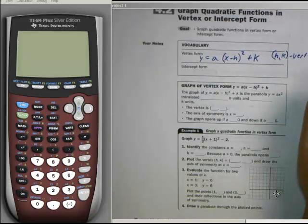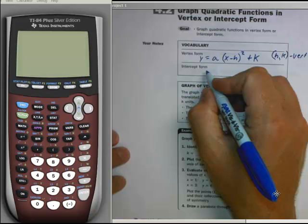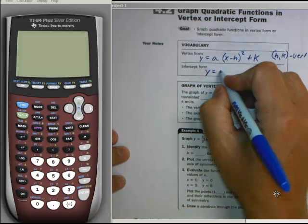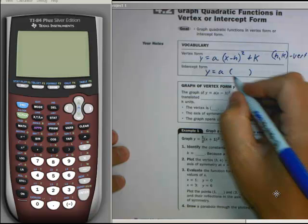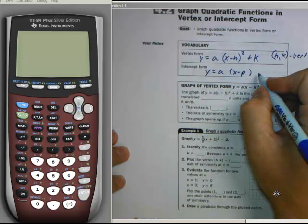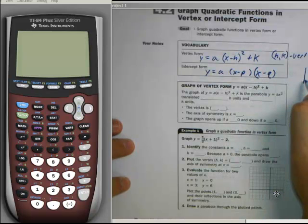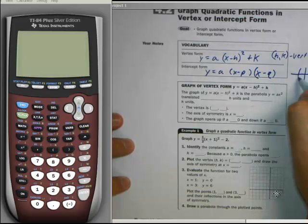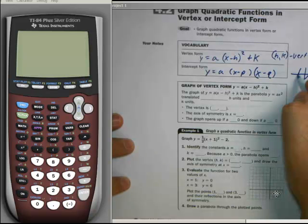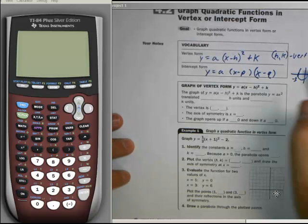So that's that high point or that low point. When you look at intercept form, what we're talking about there is the different x-intercepts that you have. And intercept form looks like this: x equals a times the quantity x minus p times x minus q. And what that means is when you graph that parabola, if it crossed here at 2 and it crossed here at negative 3, that would be your p and your q.